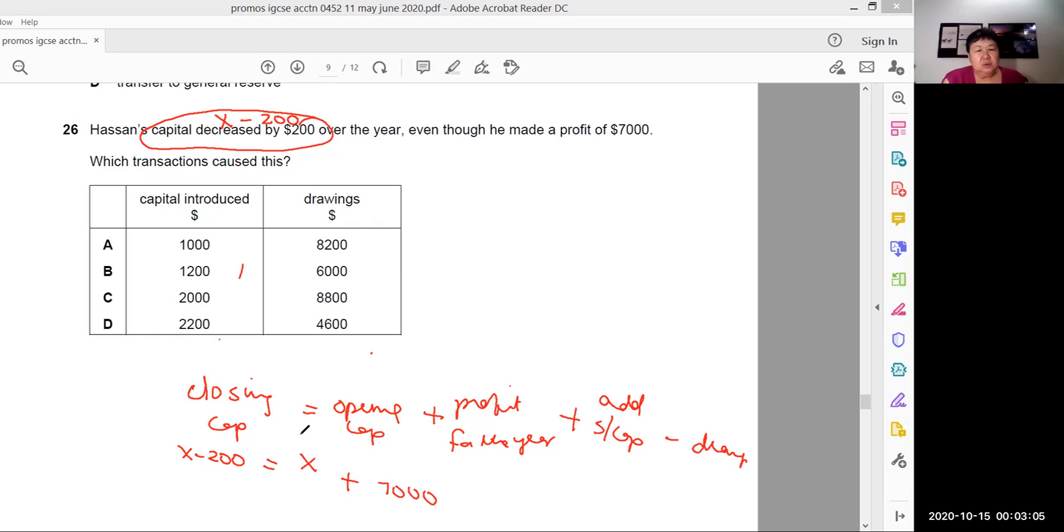What transaction caused this? So what I did was, we have X minus 200, which is the first one. That would be additional capital of 1,000 and drawings of minus 8,200. I'm just filling up the A here. Guess what? So by simple math, X minus 200, left hand side, on the right hand side, X plus 8,000 minus 200. Can you see? X plus 7,000 minus 1,000 minus, that would be X plus 8,000 minus 8,200. We'll also give you X minus 200. So the left hand side equals to the right hand side. Therefore, which transaction caused this? Would have been A. A would have been the answer. And we are done. All right.